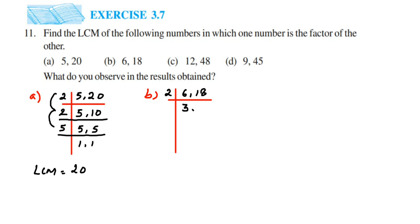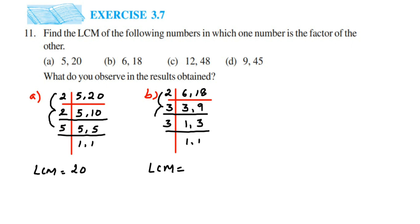Now 3 and 9 don't go in the 2 times table together, so we move to 3. 3 ones are 3 and 3 threes are 9. Last we have only one 3, so 3 ones are 3. The LCM will be the product of the prime numbers: 2 × 3 × 3 = 18. So LCM is equal to 18.